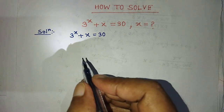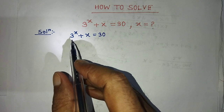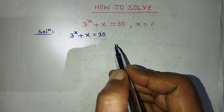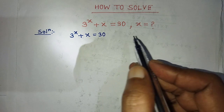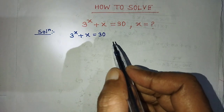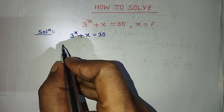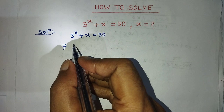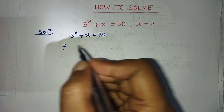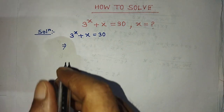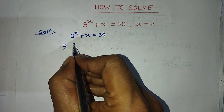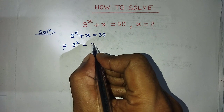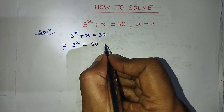Our given exponential equation is 3 to the power x plus x is equal to 30. To find the value of x from this exponential equation, first of all we have to transpose x from the left side to the right side. So we write on the left hand side: 3 to the power x is equal to on the right hand side: 30 minus x.